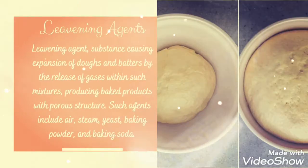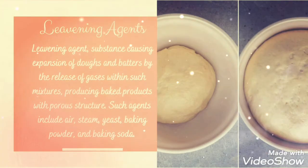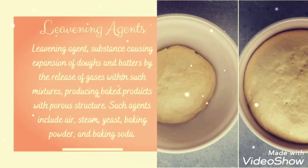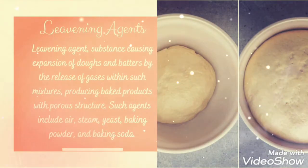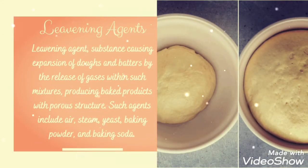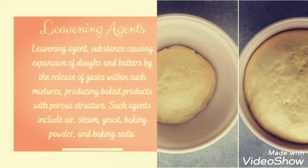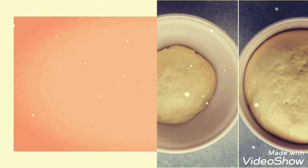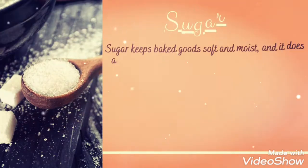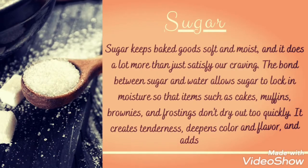Leavening agents are substances causing expansion of doughs and batters by the release of gases within such mixtures, producing baked products with a porous structure. Such agents include air, steam, yeast, baking powder, and baking soda.